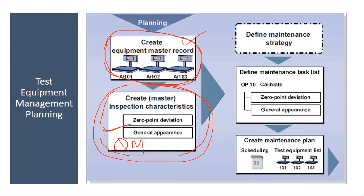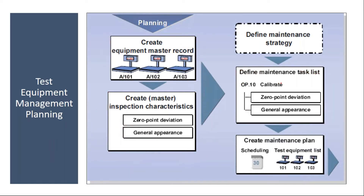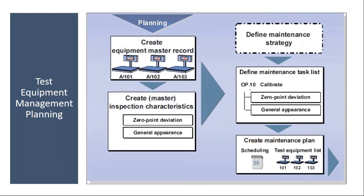If required, if you have multiple cycles, then we can define the strategy; if you have only one cycle, it is not required. Then we will create the task list. In the task list for the operation, the QM MICs are assigned. This is the actual integration — QM MICs are assigned to the PM task list operations.